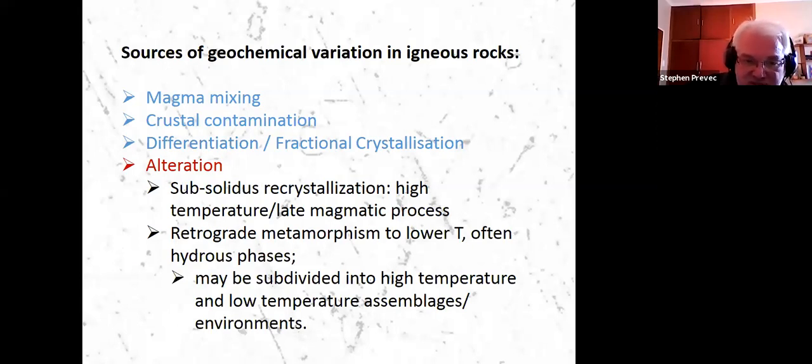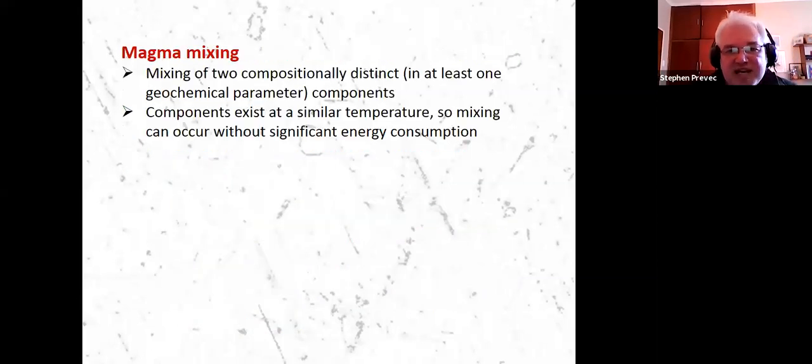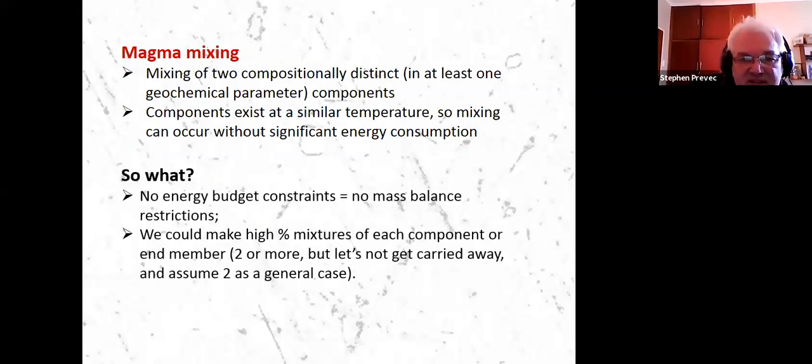And then there's the more traditional so-called deuteric type processes, where it's probably late magmatic water causing alteration to primary magmatic minerals. We're not going to get to that today anyway. So magma mixing, again, means we are mixing two high temperature melts, which means we have effectively no energy budget constraints on our mixing. So we can produce high percentage mixtures of either component. We'll assume we're talking about two end members, although we're in theory, not limited to that.